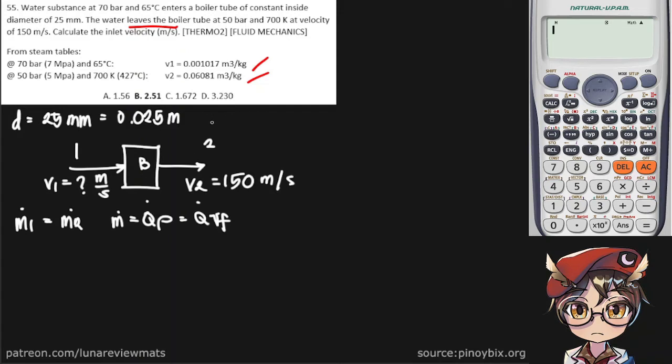You can probably see where I'm going with this. So, later on, let's replace m sub 1 with the volume flow rate divided by the specific volume for the first state, and similarly on the other side this would be the second state.